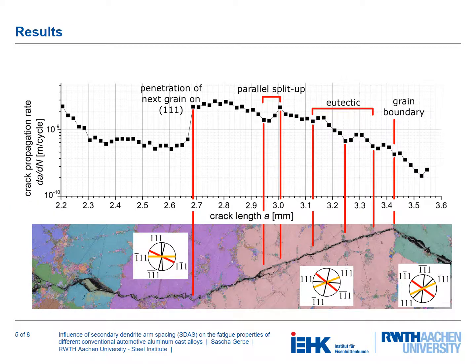The results show a significant influence of microstructural characteristics — such as secondary dendrite arm spacing and silicon particles — on the crack propagation rate, which can be seen to be slowed down by, for example, eutectic regions.